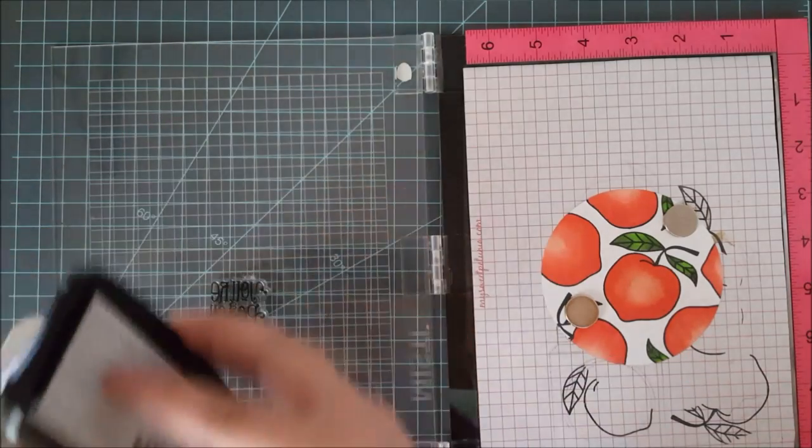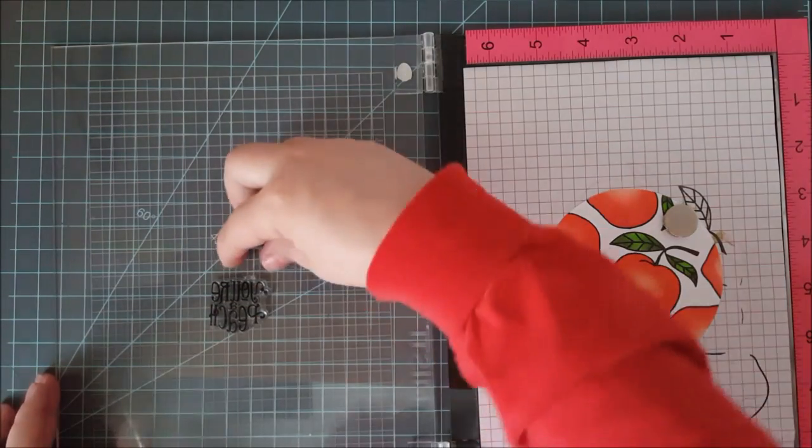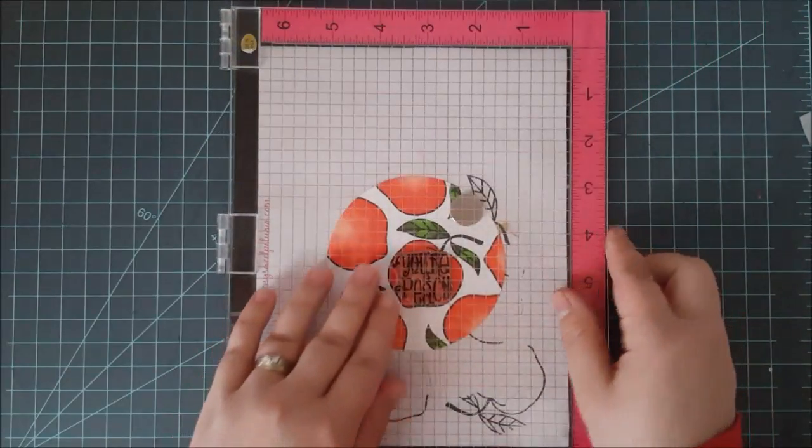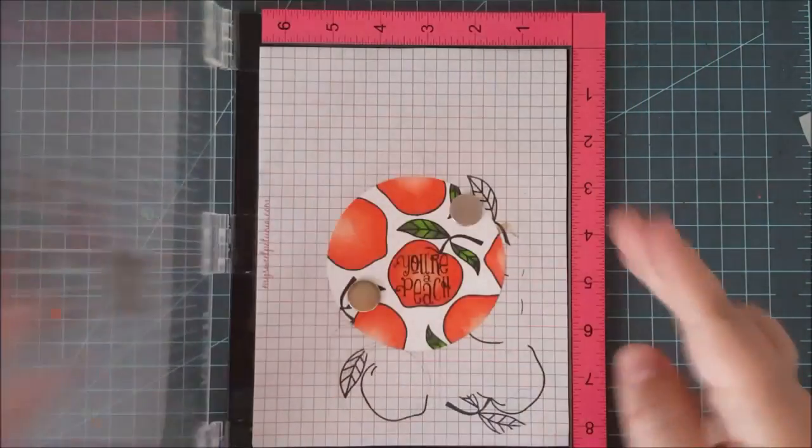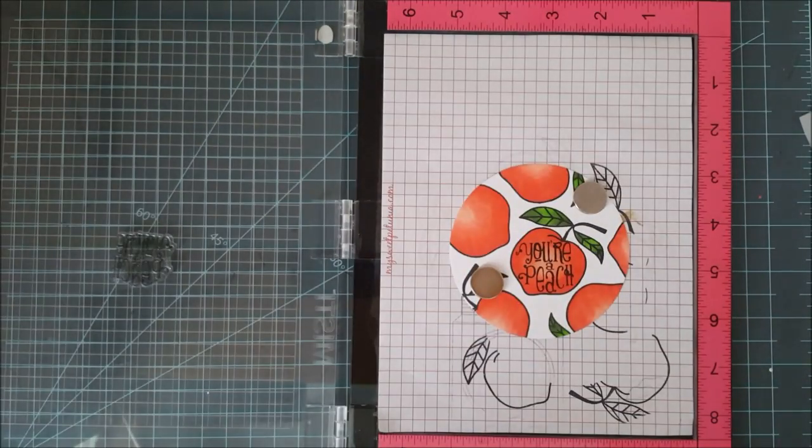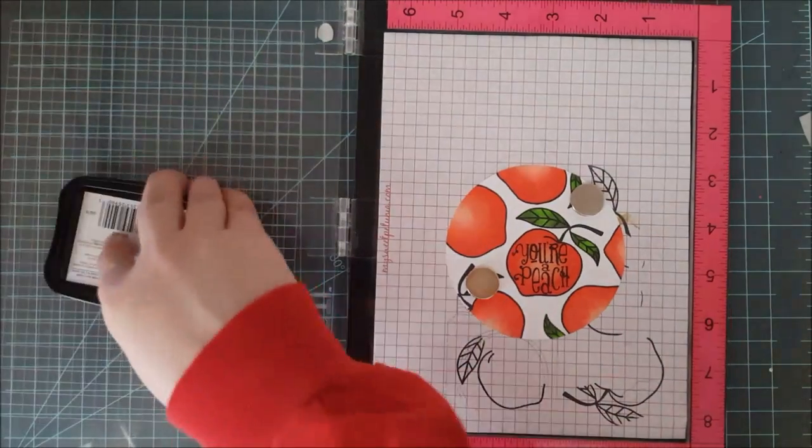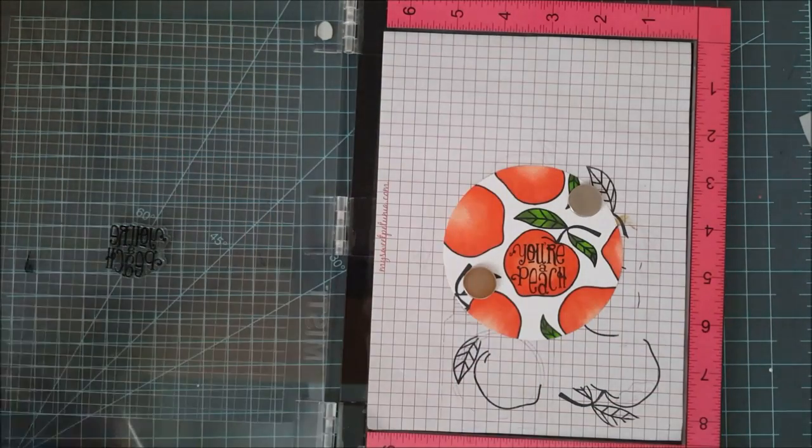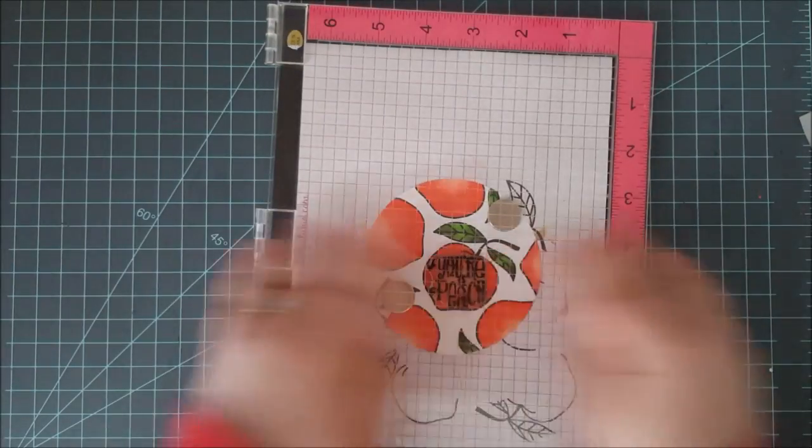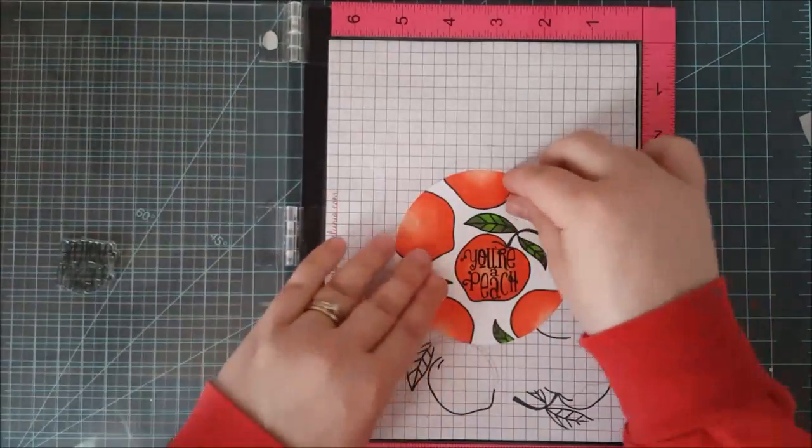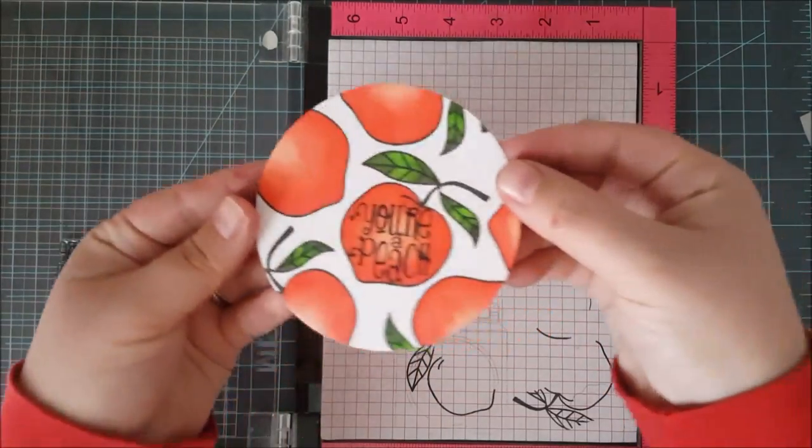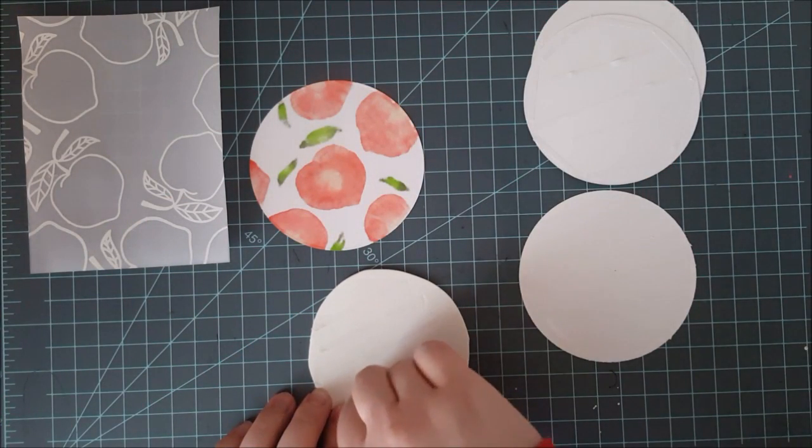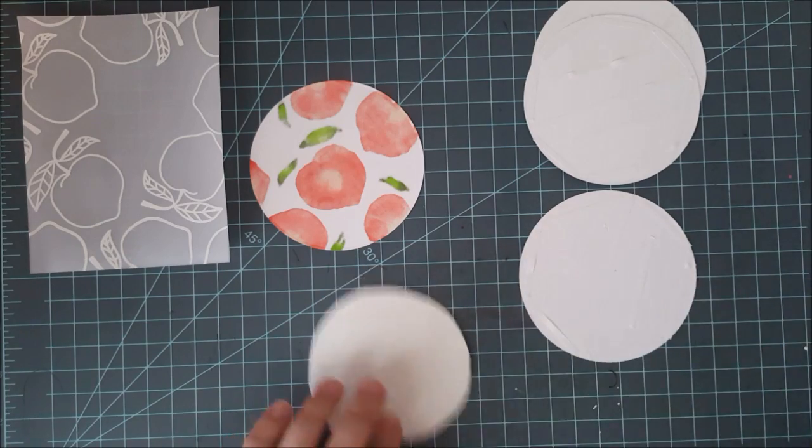Once those were all colored and blended out as much as I like them, I'm going to place the sentiment right in that first peach that I stamped. This is a sentiment from the set and it reads 'you're a peach,' so this is a thank you card. I always need thank you cards it seems like. I just lined that up with that peach, picked it up with my MISTI lid, and then I'll stamp it down a few times in Memento Tuxedo Black ink. I didn't want to risk a dye ink right here, so I chose to use my Memento Tuxedo Black to cut down on bleeding. I just needed to stamp it a couple times to get the really black intensity that I like.